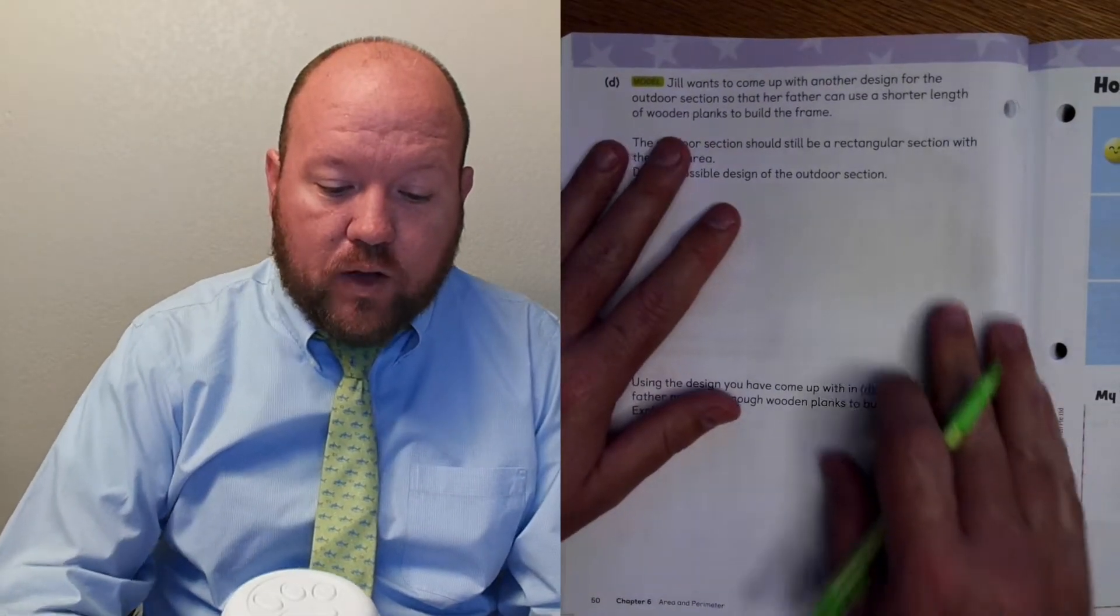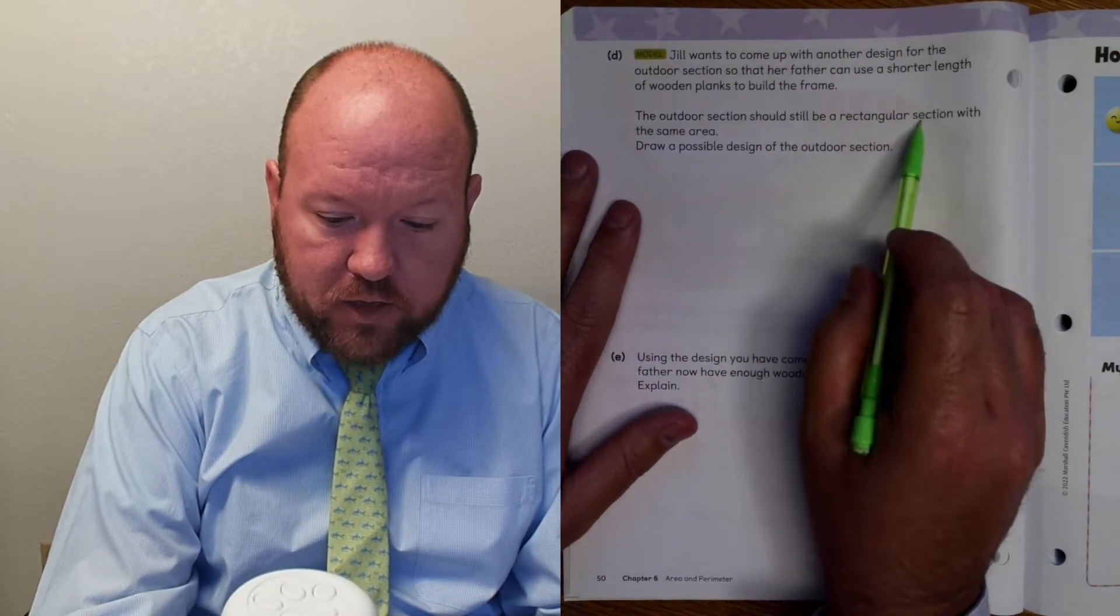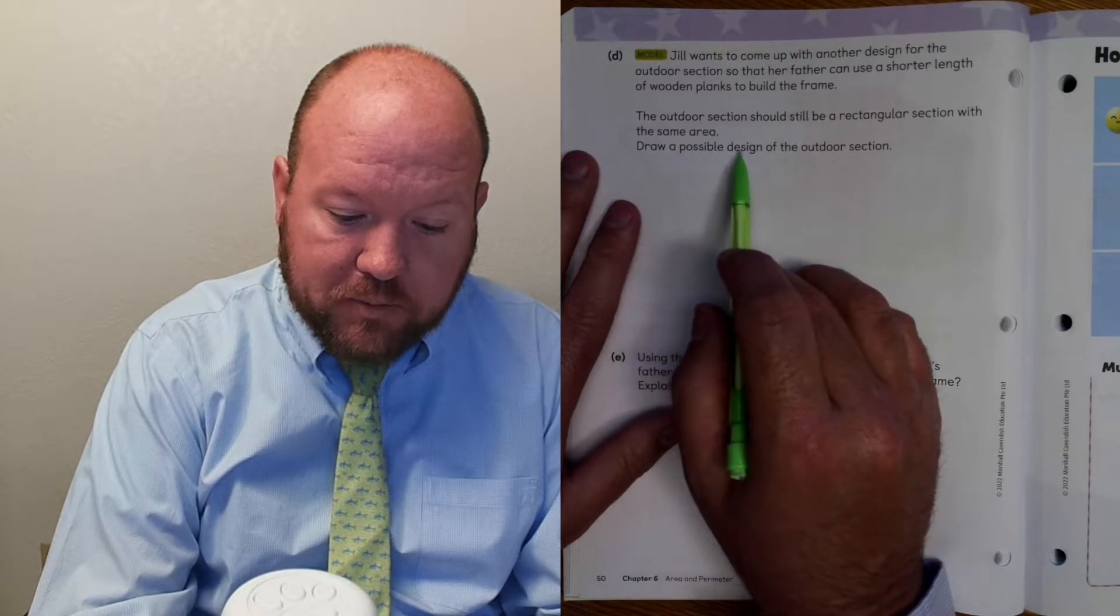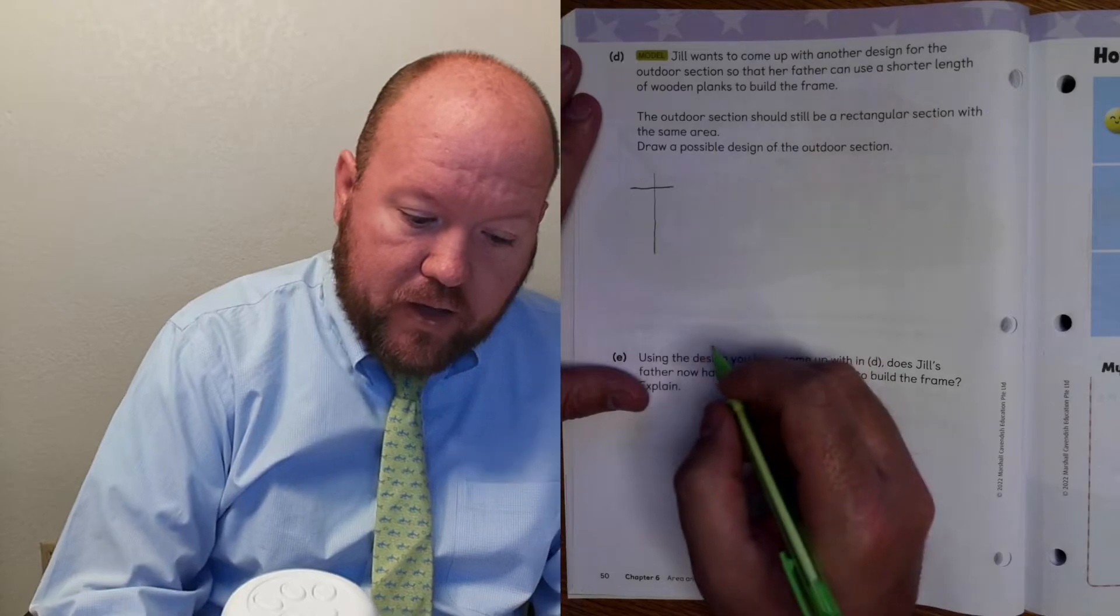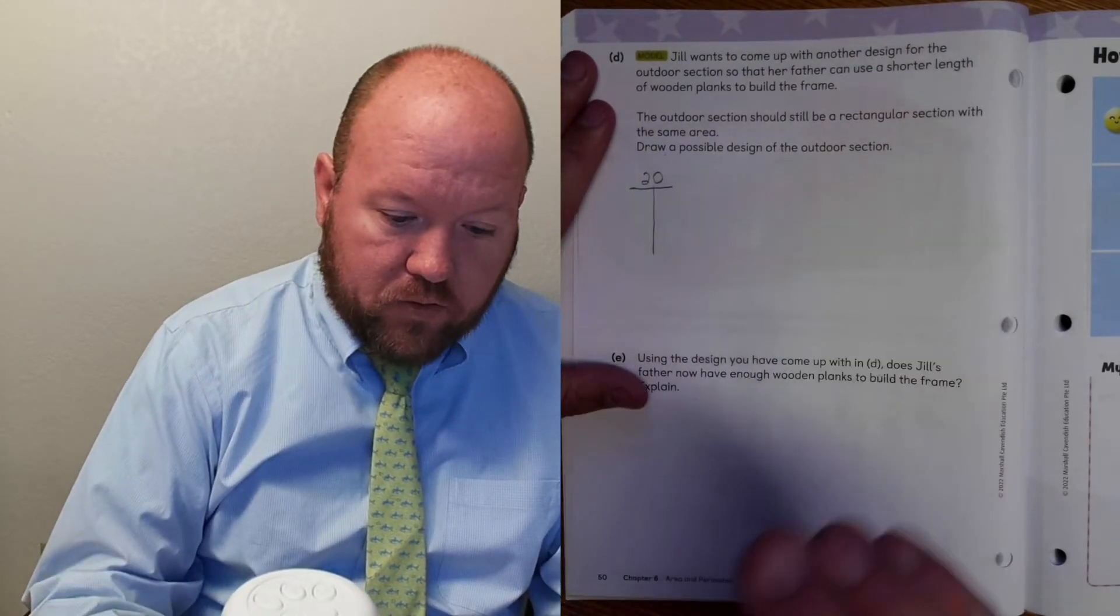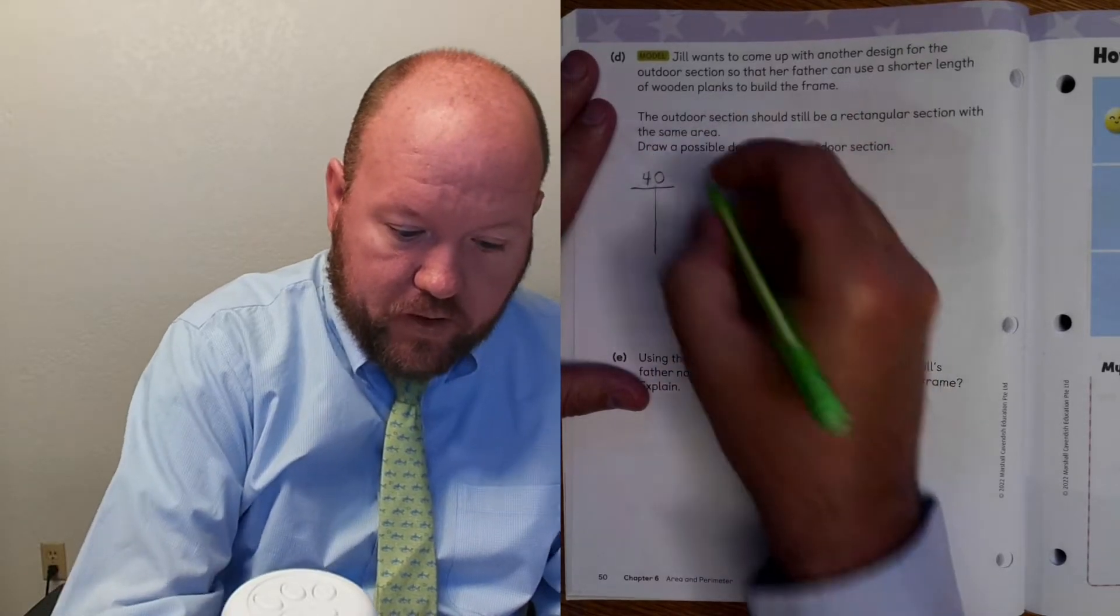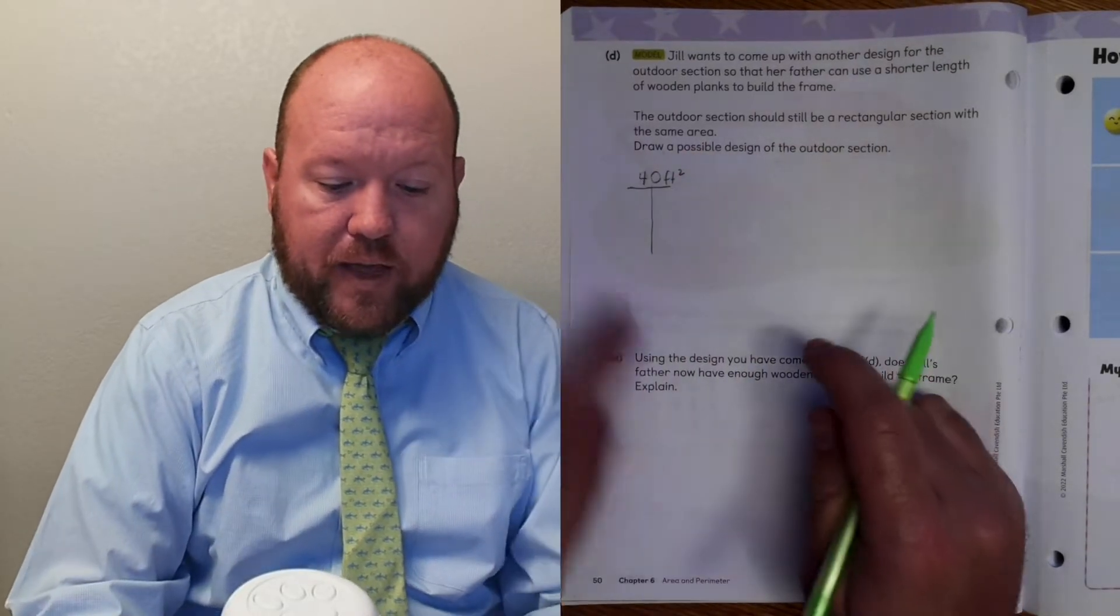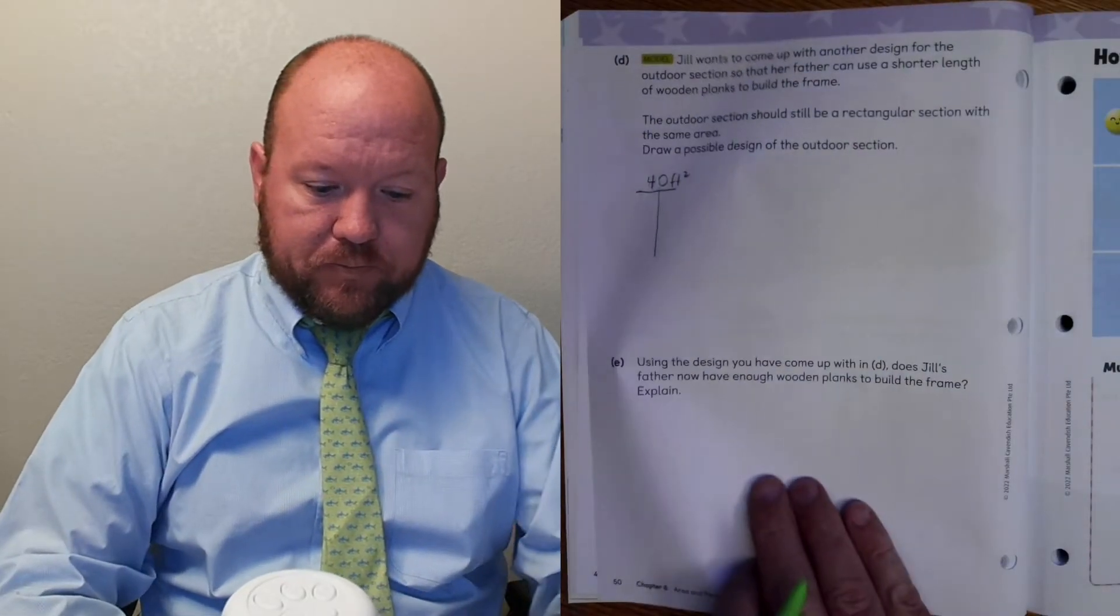So now, Jill wants to come up with another design for the outdoor section so that her father can use a shorter length of wood planks to build the frame. The outdoor section would still be a rectangular section with the same area. Draw the possible designs of the outdoor section. So, what are possible designs? I'm going to draw a chart. And these are going to be multiplication problems that make 40. 40 square feet is what the outdoor section is.